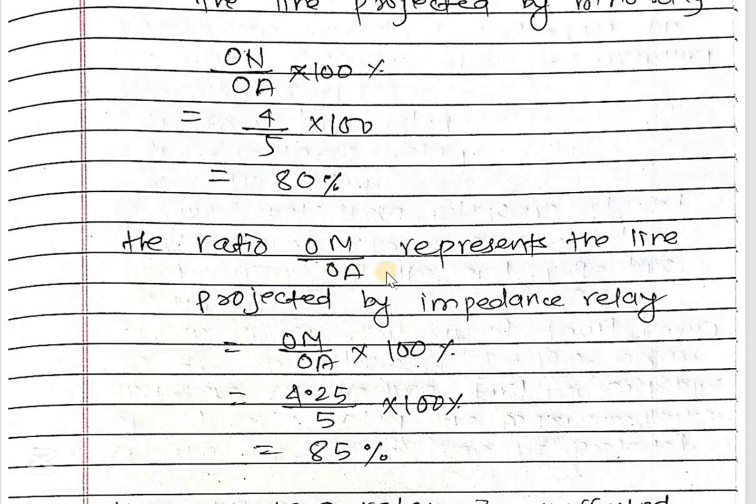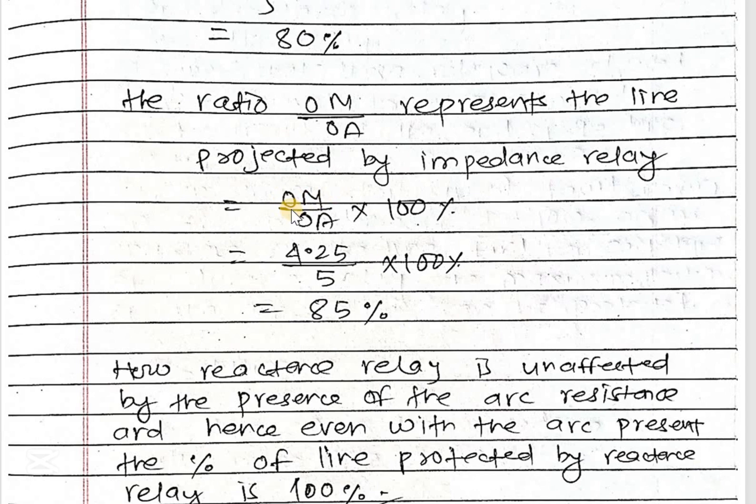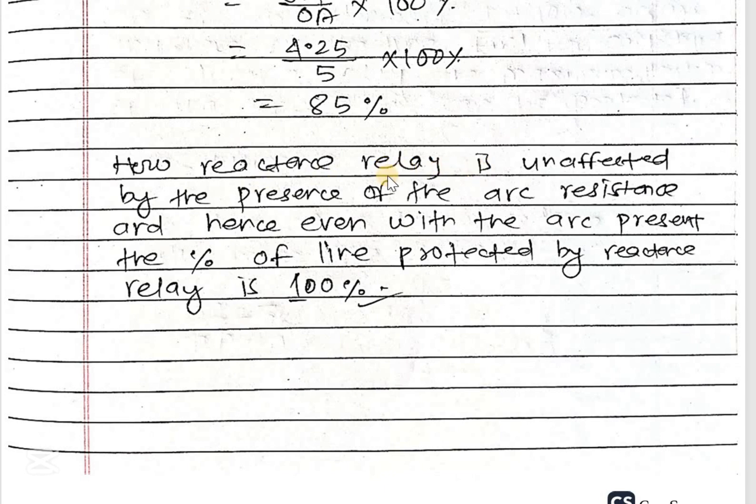The ratio of OM and OA represents the line protected by impedance relay. That is OM upon OA equals the value of OM, which is 4.25 upon 5, that is 85 percent.